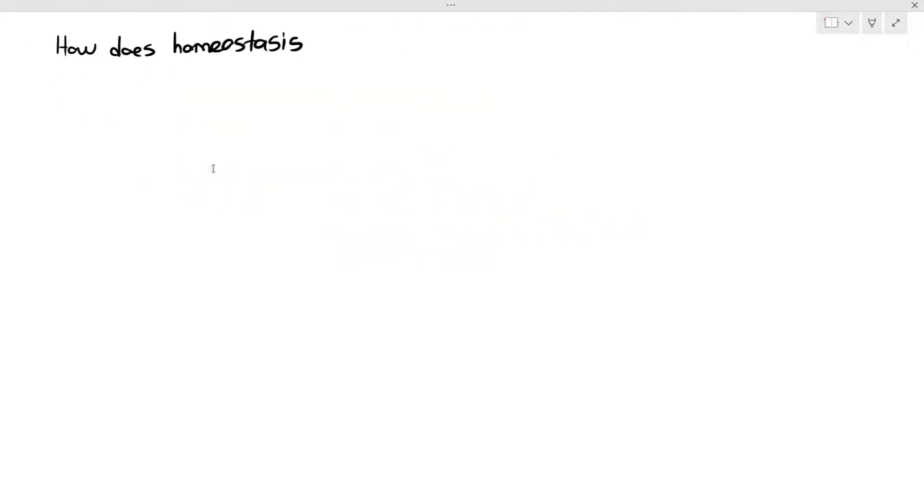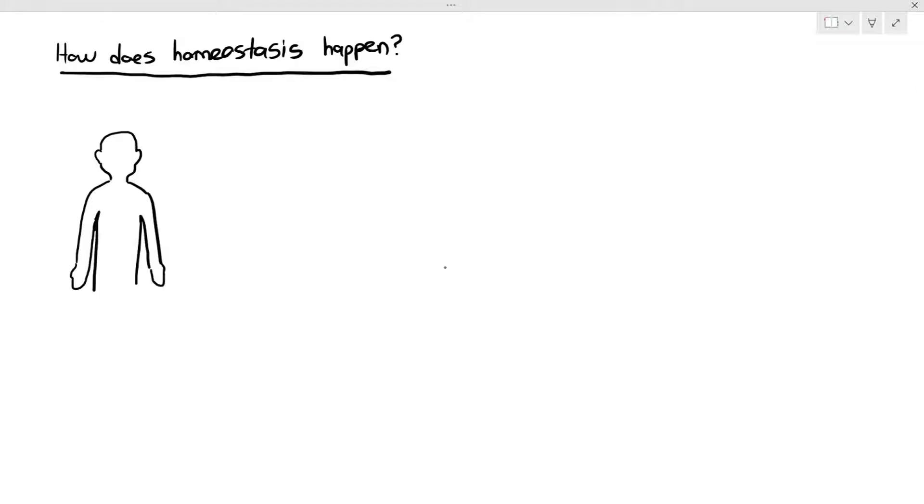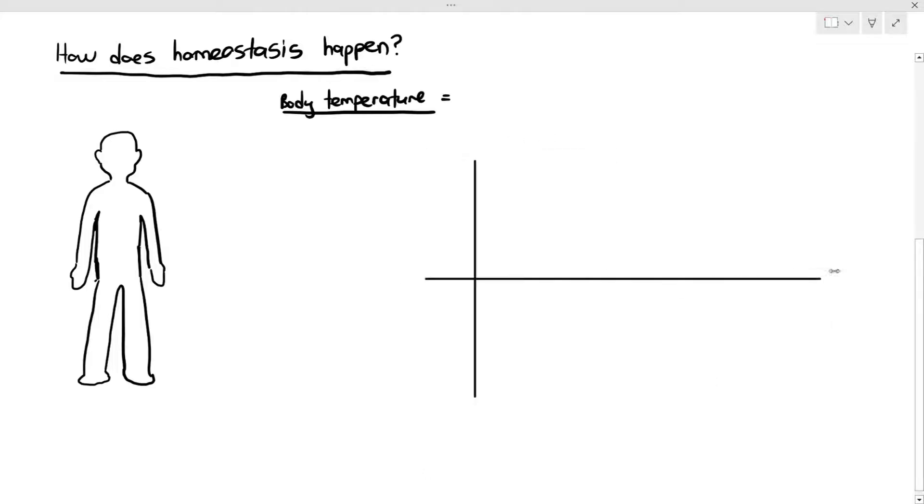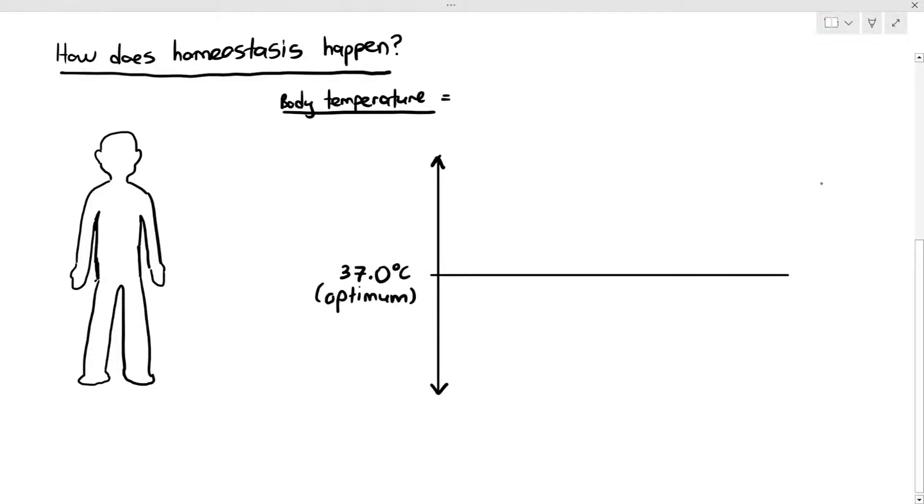So how exactly does homeostasis happen? So I'm just drawing a person over here. Now let's imagine body temperature. Under normal circumstances, our optimum body temperature is about 37 degrees Celsius. It's about 36.5 to 37.1, but let's just put it at 37.